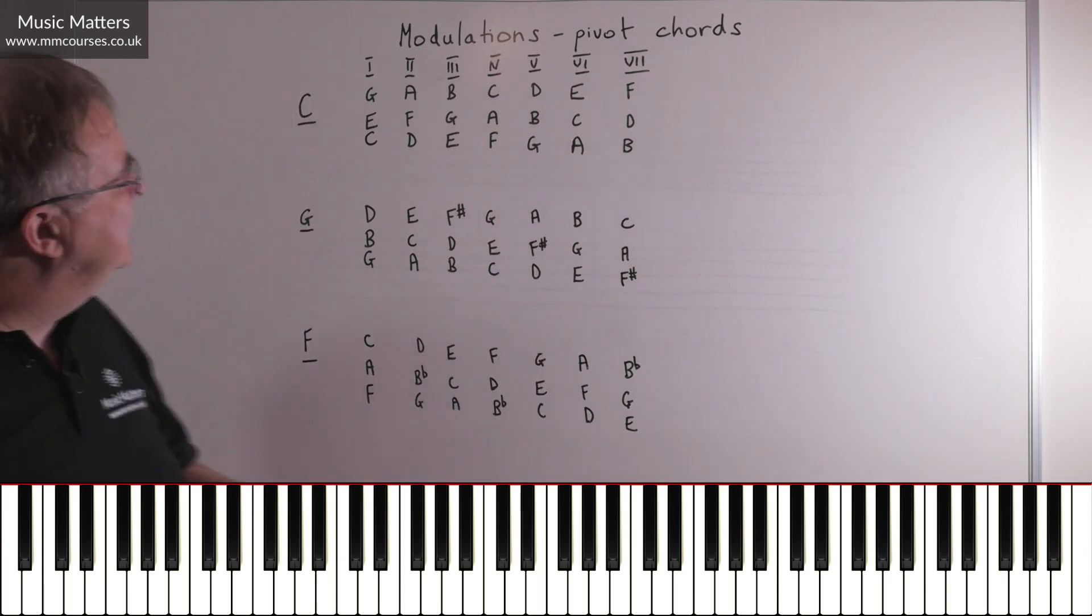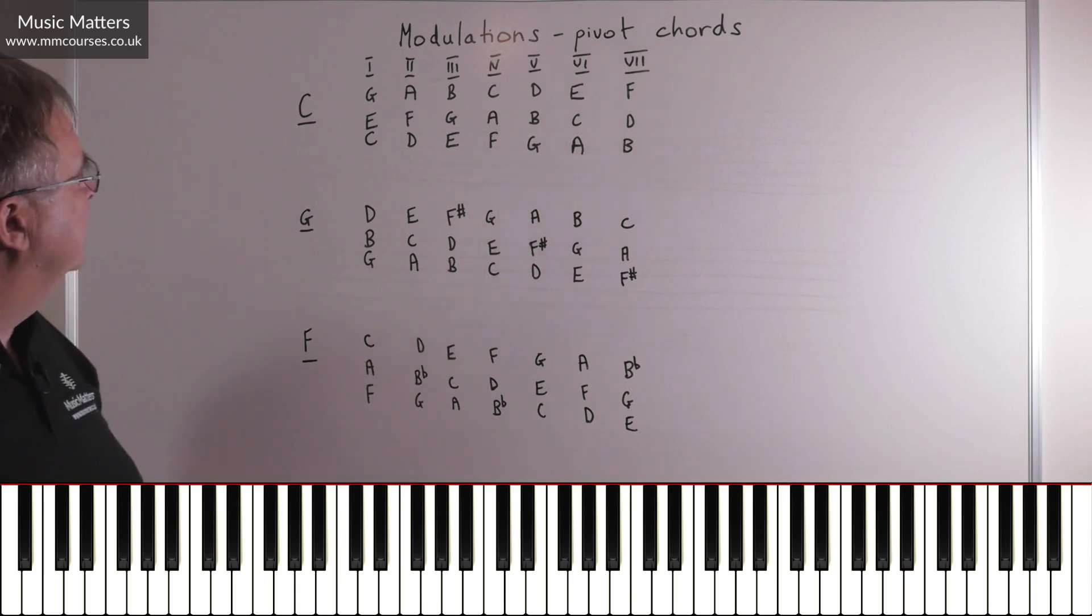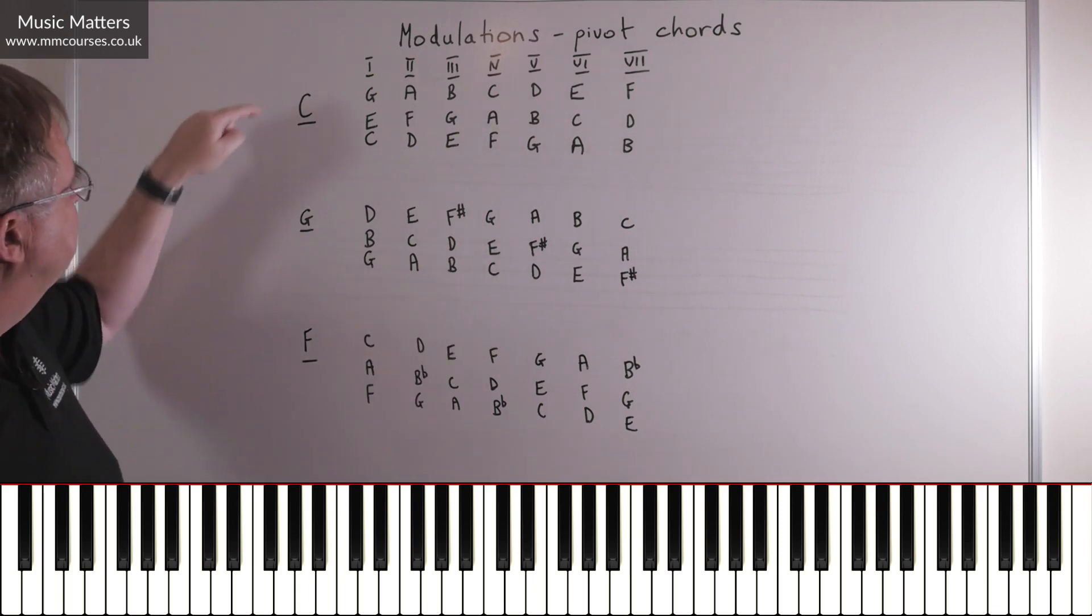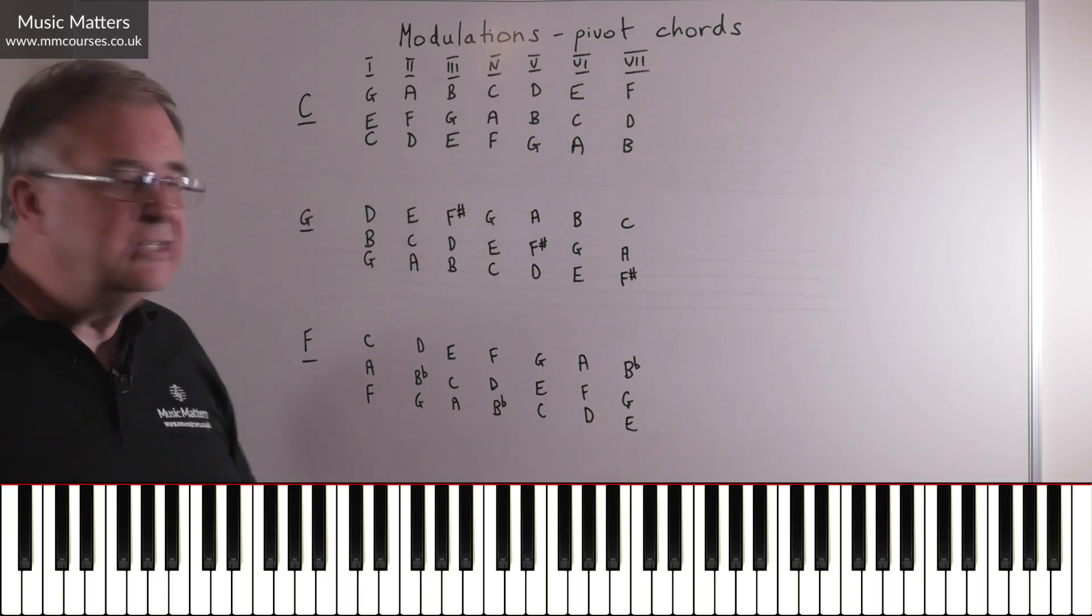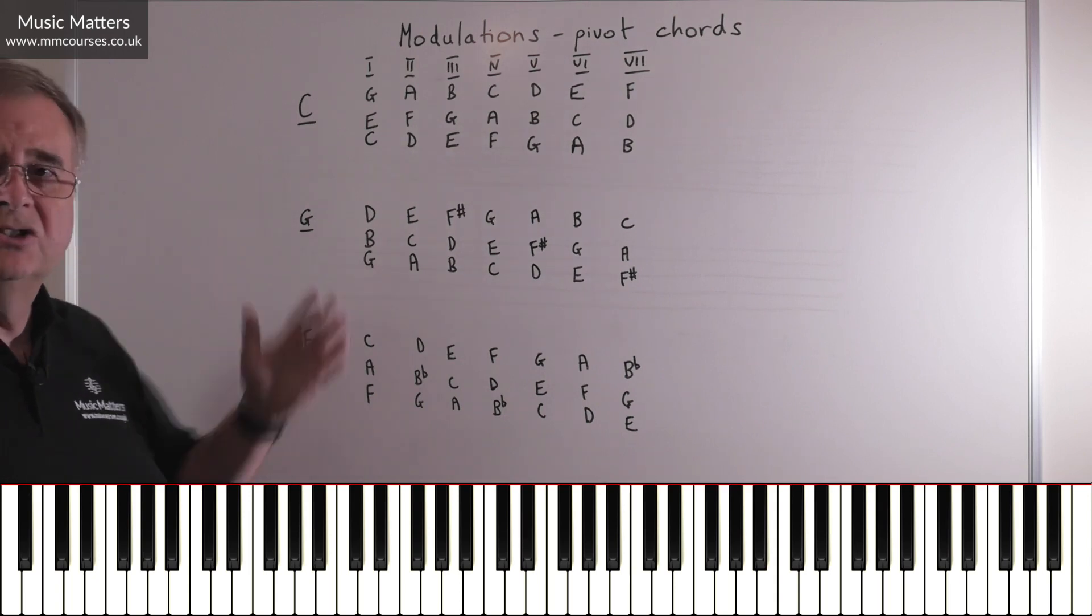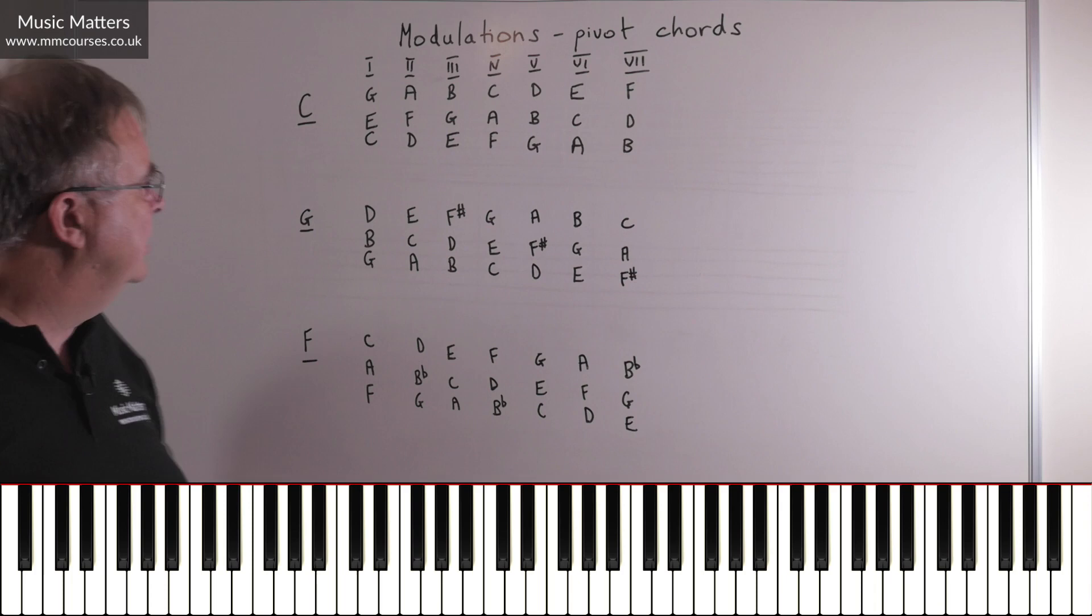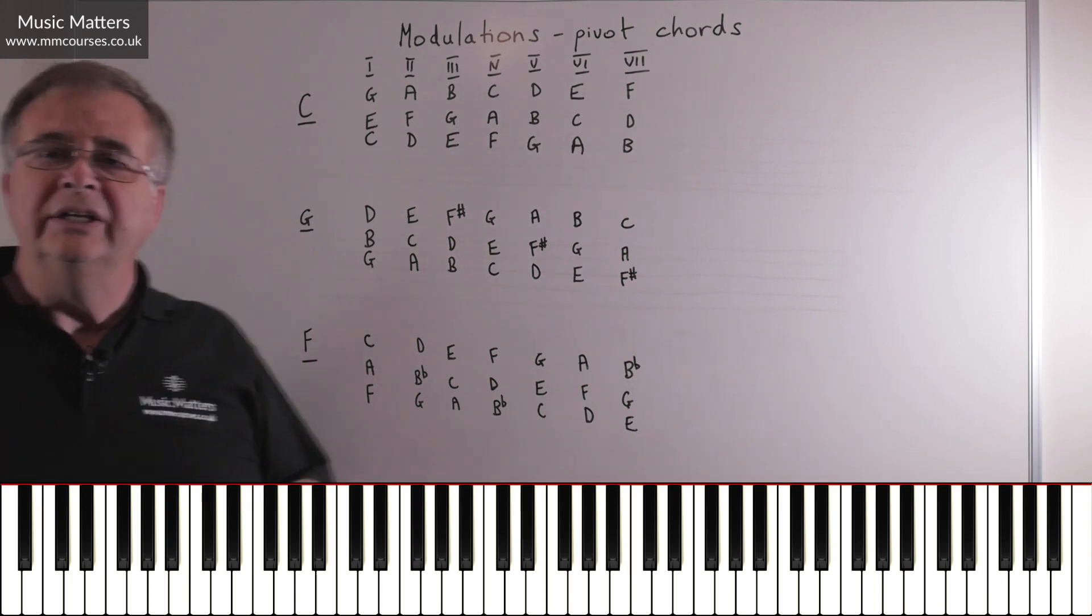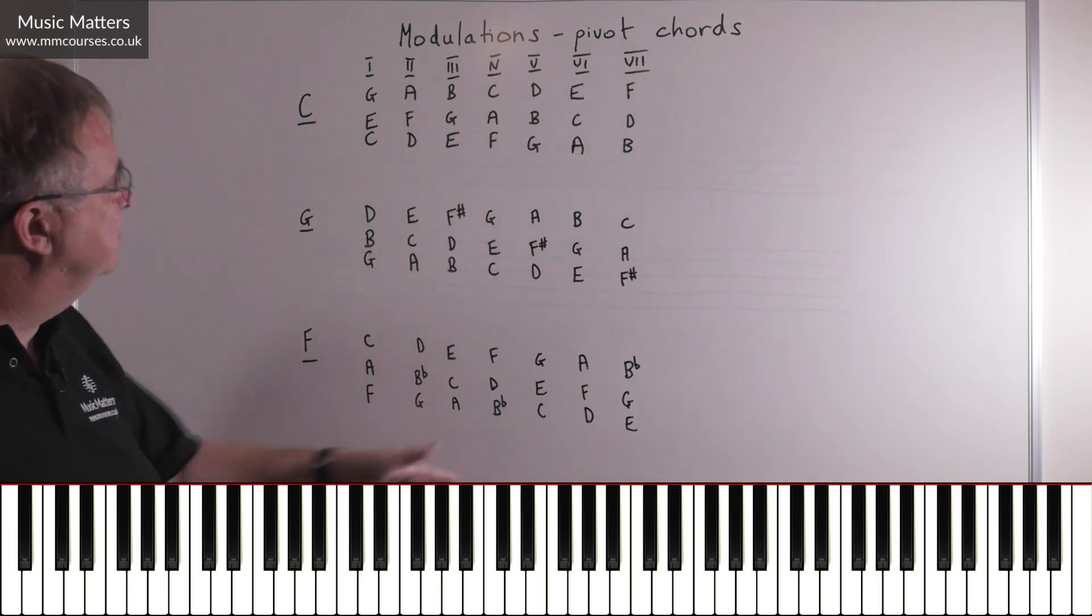So what I've done here is I've listed all the chords in three different keys, but three keys that are fairly closely related. So C major, G major, F major. C major of course, no sharps, no flats in the key signature. G major's just one key around the circle of fifths, it's got one sharp, it happens to be F sharp. And then F major, which of course is one key on the flat side of C major, and it has a B-flat.